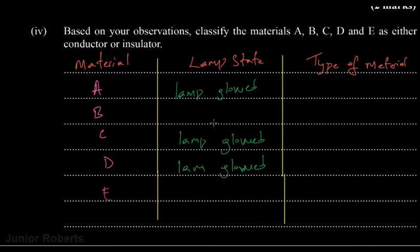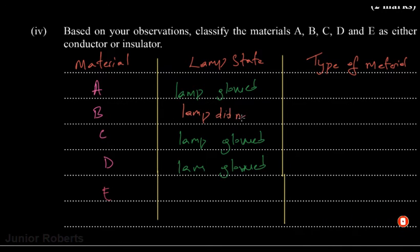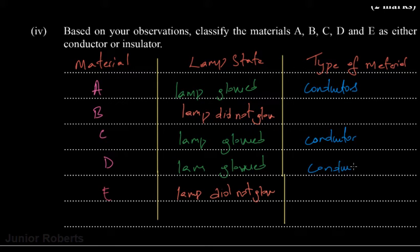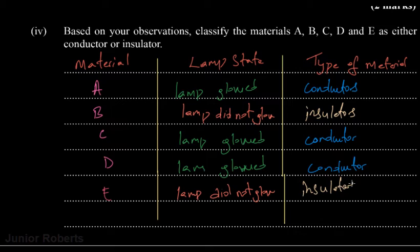For the others — B and E — we record lamp did not glow. Therefore, since for A, C, and D the lamp glowed, we classify those as conductors. And since B and E the lamp did not glow, those are insulators.